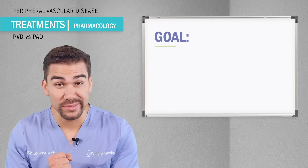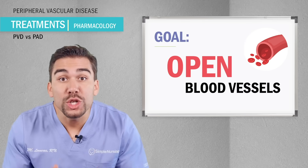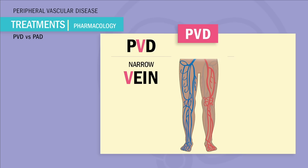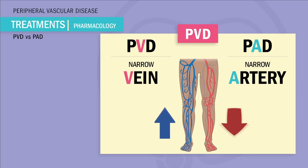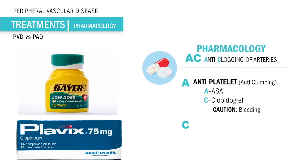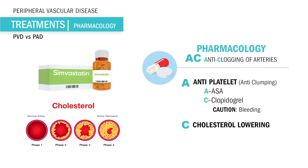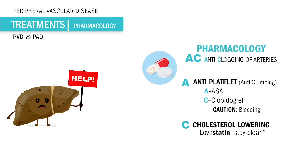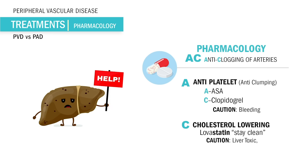For famous treatments, the main patient outcome goal is to open up those narrowed blood vessels. We prevent clogging of vessels with drugs — think AC for anti-clogging. A is for anti-platelets like aspirin and clopidogrel (brand name Plavix), which prevents platelets from clumping and forming clots. C is for cholesterol-lowering drugs — statins, ending in '-statin' like lovastatin. Remember: stay clean because it cleans out the arteries. Since statins prevent cholesterol production in the liver, they are very liver toxic — do not give to patients with hepatitis or cirrhosis, and avoid grapefruit juice as it blocks statin drugs.